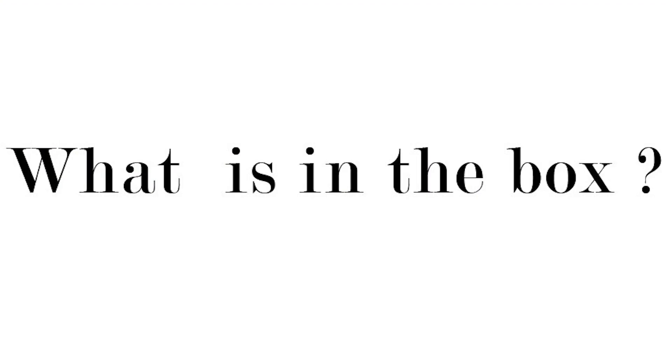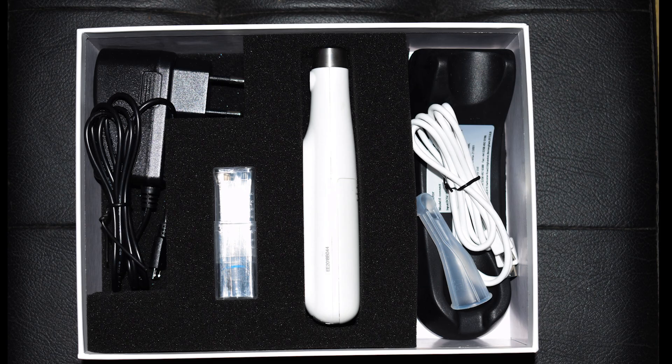Let me take you directly to the content of the box. As you can see the box contains one charger, one endomotor, one cable which connects the endomotor with the Epex Apex locator, and one stand.